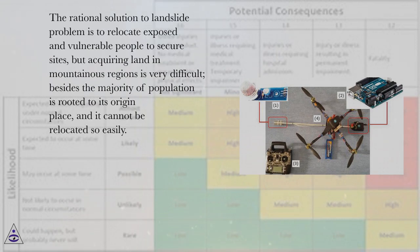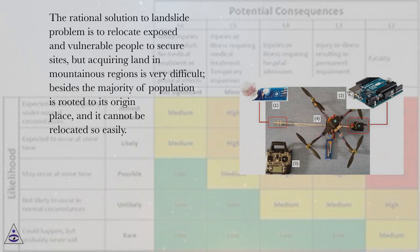The rational solution to the landslide problem is to relocate exposed and vulnerable people to secure sites, but acquiring land in mountainous regions is very difficult. Besides, the majority of the population is rooted to its place of origin and cannot be relocated so easily.